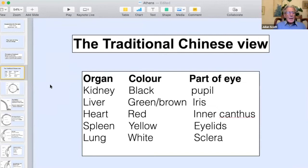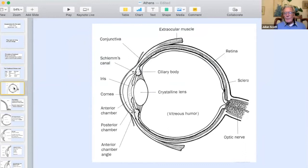So there's this very simple correspondence of the kidney relating to the pupil because it's black, the liver relating to the iris because it's green or brown. The character Ching can mean brown in certain situations. The heart, because it's red, relates to the inner canthus. The spleen, because it's yellow and relates to flesh, relates to the eyelids. And the lung, because it's white, relates to the sclera. It's a very simple idea, but it's actually got profound consequences for treatment. Now, what's happened in the last 100 years is a much deeper understanding of the eye and the different parts of the eye. And I think that this understanding is what opens the way for treatment.